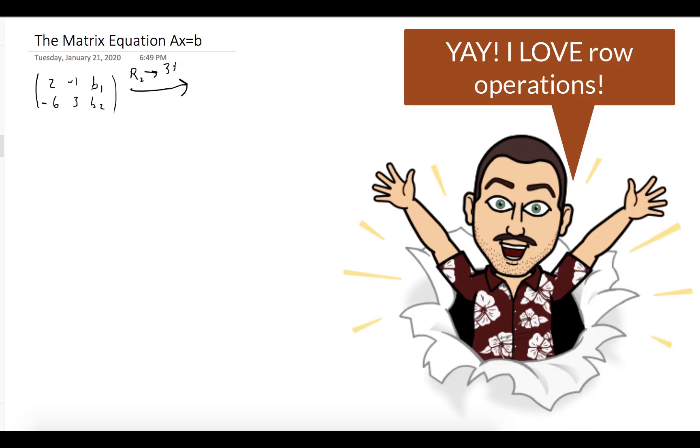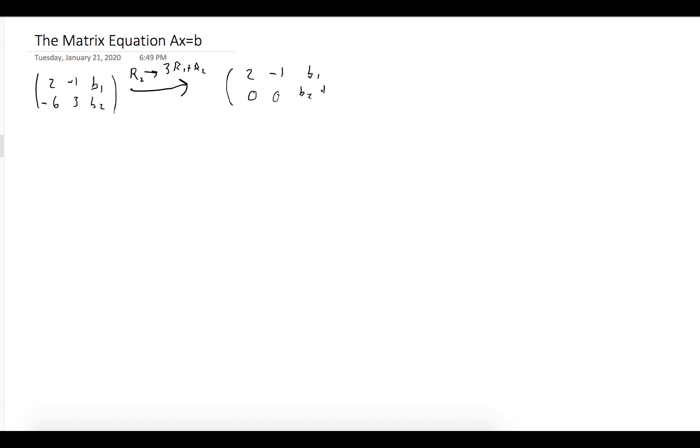What else do we do in this class? So we'll replace row 2 with 3 times row 1 plus row 2. We got 2, negative 1, b_1, 0, 0, b_2 plus 3b_1.